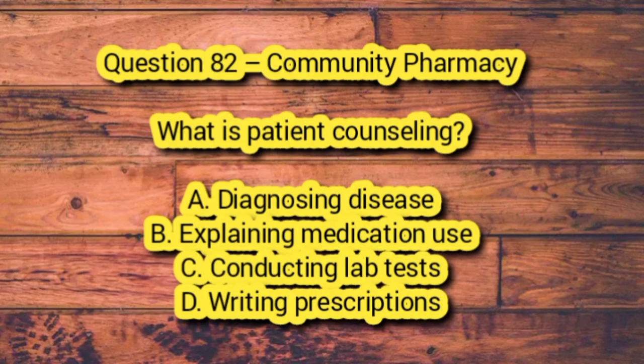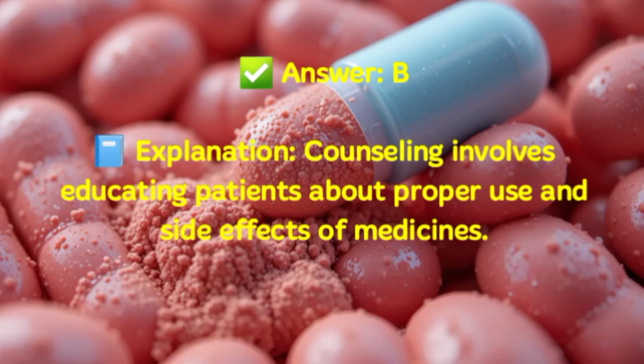Question 82 – Community Pharmacy. What is patient counseling? A. Diagnosing disease. B. Explaining medication use. C. Conducting lab tests. D. Writing prescriptions. Answer: B. Explanation: Counseling involves educating patients about proper use and side effects of medicines.